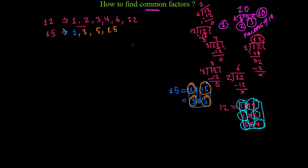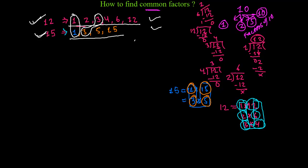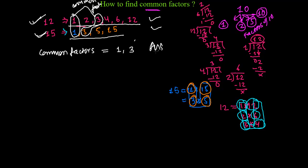Now I have to find the common factors. Common factors are those which appear in both lists. Looking at the factors of 12 (1, 2, 3, 4, 6, 12) and the factors of 15 (1, 3, 5, 15), the numbers that appear in both are 1 and 3. So the common factors of 12 and 15 are 1 and 3.